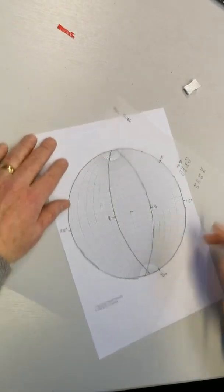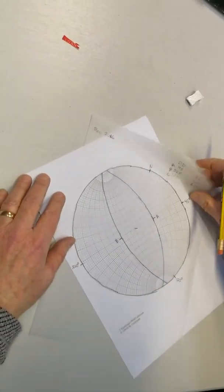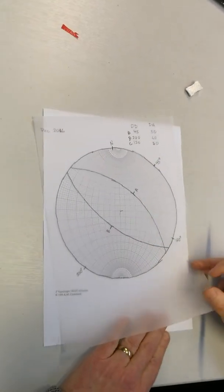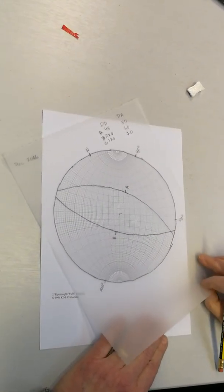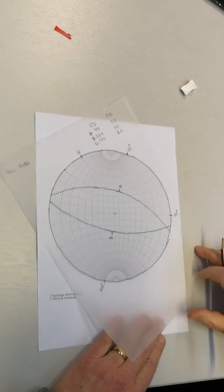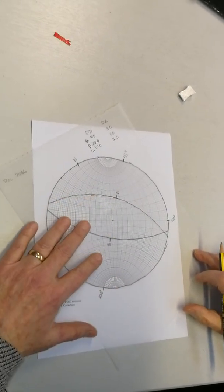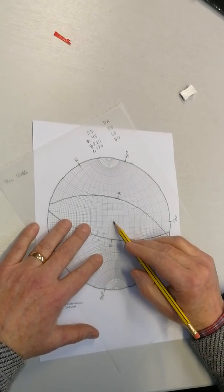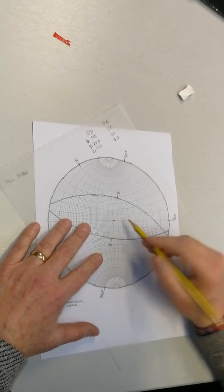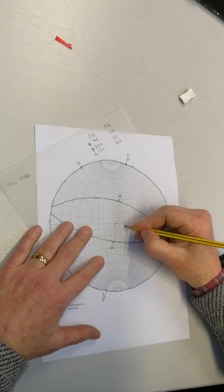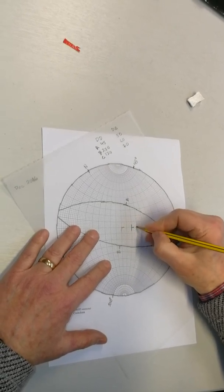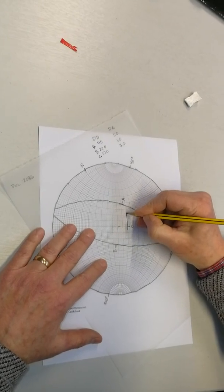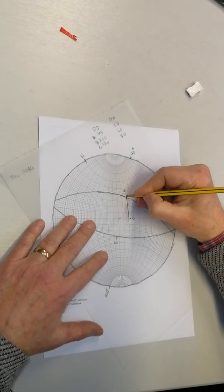And then the last one, which we'll call C, is 120, 70. So I find the 120 mark out on the outer edge, bring it over to the east-west line of the stereo net, and then I want to count in 70 degrees. Or count out, this is 90, 80, 70. So again, let's put a mark there to identify that as joint set C. And now I'm tracing the great circle.